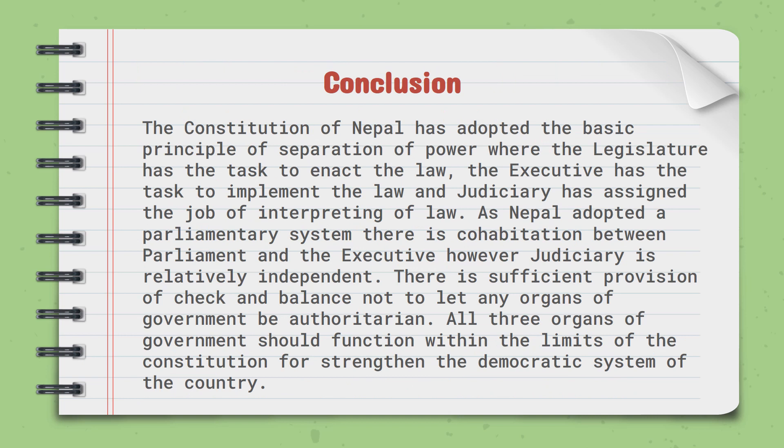In conclusion, the Constitution of Nepal has adopted the basic principle of separation of powers, where the legislature has the task of enacting law, the executive has the task of implementing the law, and the judiciary is assigned the job of interpreting the law. As Nepal has adopted a parliamentary system, there is co-dependence between parliament and executive. However, the judiciary is relatively independent. There is sufficient provision of check and balance to prevent any organ of government from becoming authoritarian, and all three organs must function within the limits of the constitution to strengthen the democratic system.